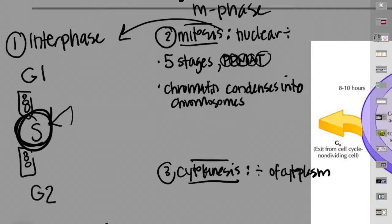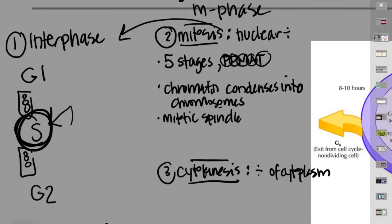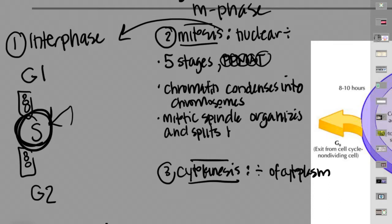Throughout interphase, the chromosomes have been in this relaxed chromatin form so that genes are accessible for protein synthesis. During active nuclear division — mitosis — the chromatin condenses so it can be organized and divided into two different piles. We say chromatin condenses into chromosomes, so chromosomes only exist during this roughly 10% of the cell cycle.